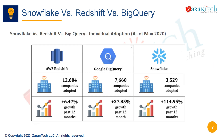This chart compares individual customer adoption for the three platforms as of May 2020. Snowflake had around 2,400 customers compared to Redshift's 20,000 plus and BigQuery's 90,000 plus.